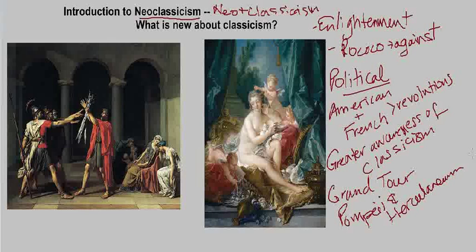There was a lot going on that converged and resulted in a shift in viewpoint generally, as well as in art. This idea of neoclassicism — new classicism — might be kind of misleading, because art had been imitating the classical world for centuries. We saw the Renaissance, we saw the Baroque. What is new in the neoclassical period is the approach to the classical world: there was more of a scientific, reasoned interpretation of the relationship of contemporary people to the classical past.